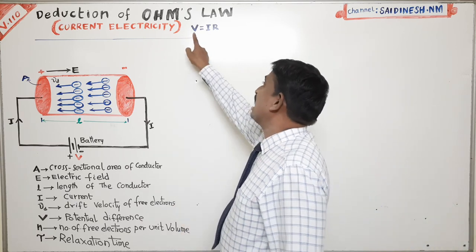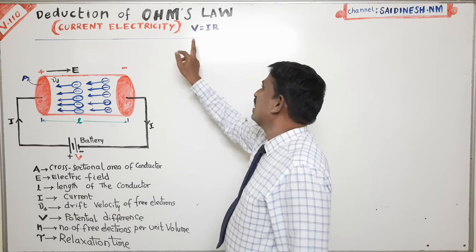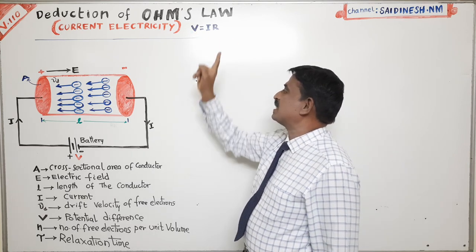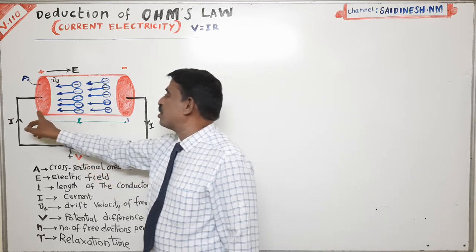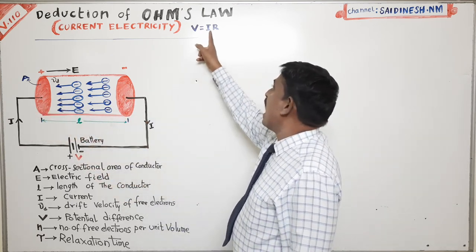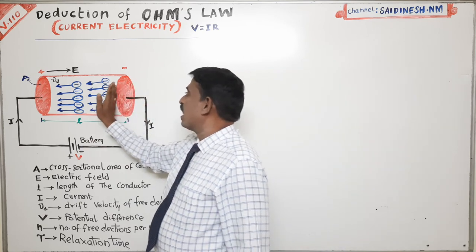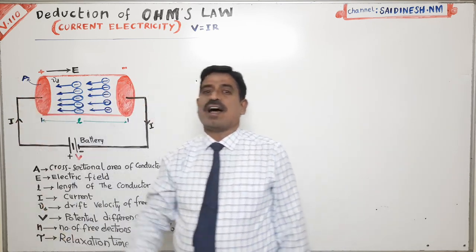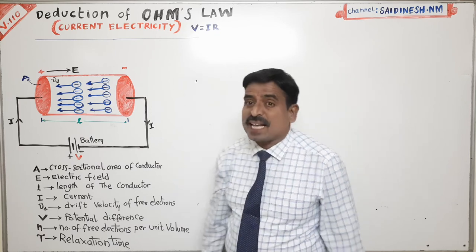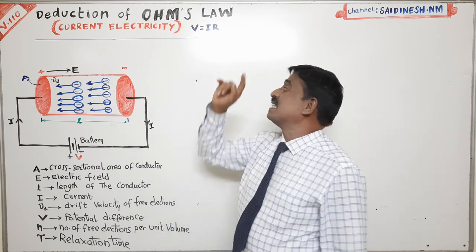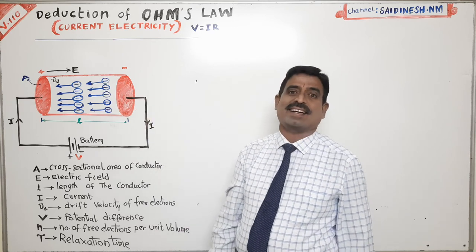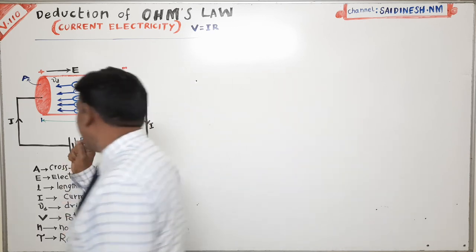V equals IR. In this formula, capital V represents the potential difference across the conductor. I represents the current flowing through the conductor. R represents the resistance of the material of the conductor.